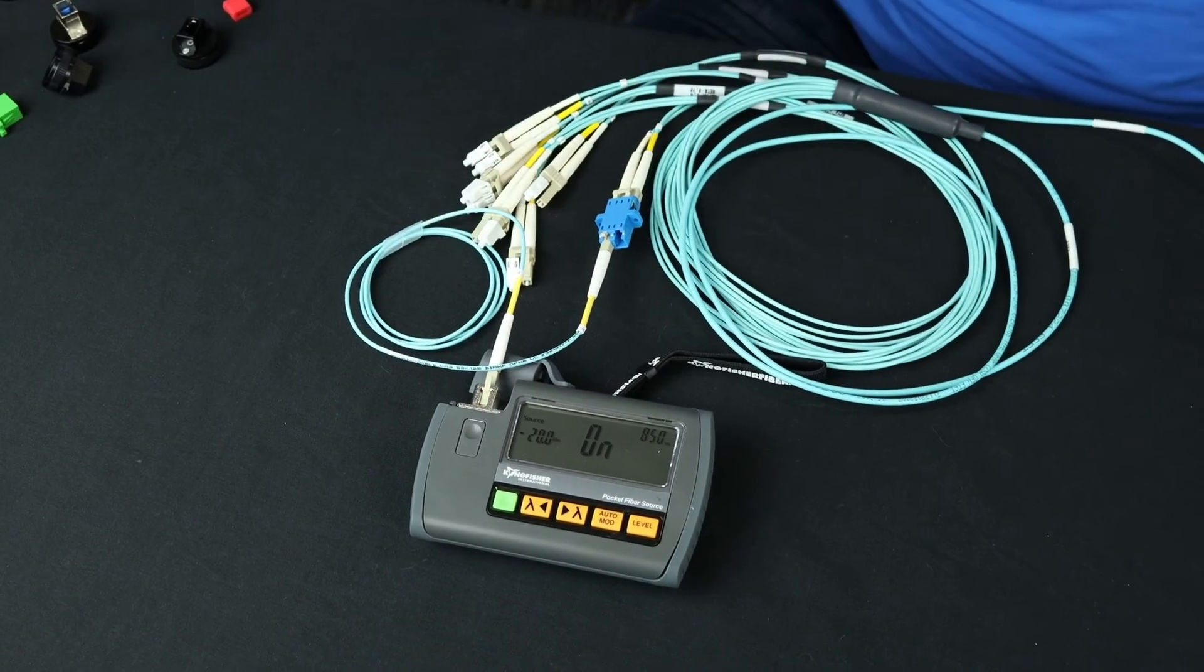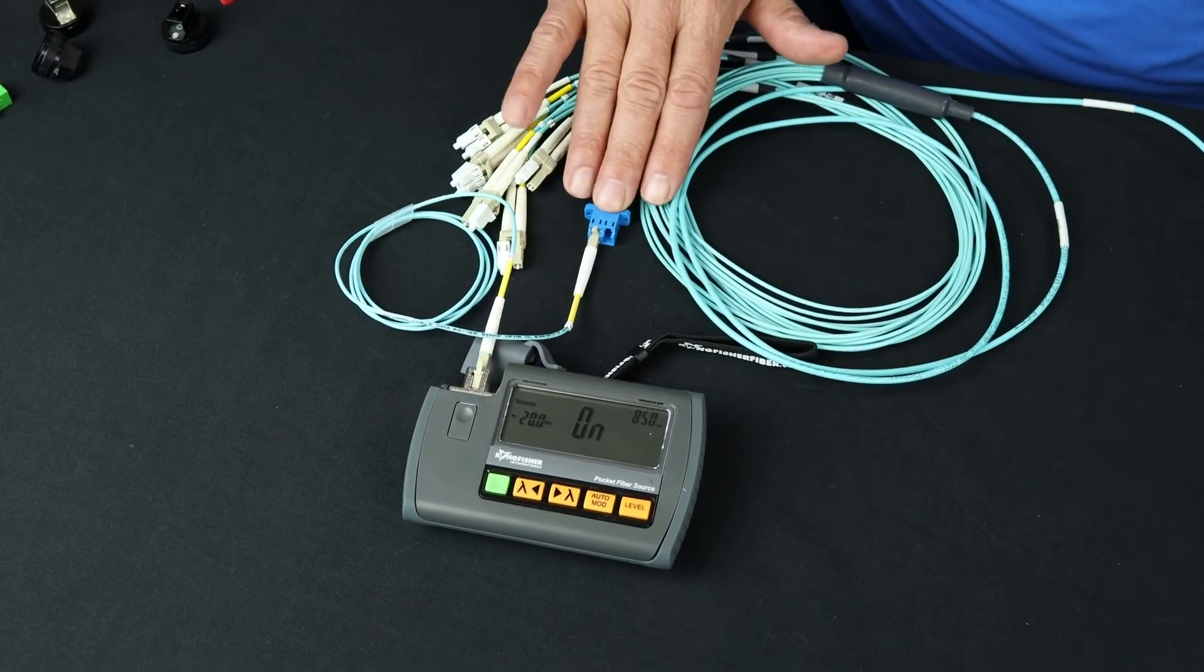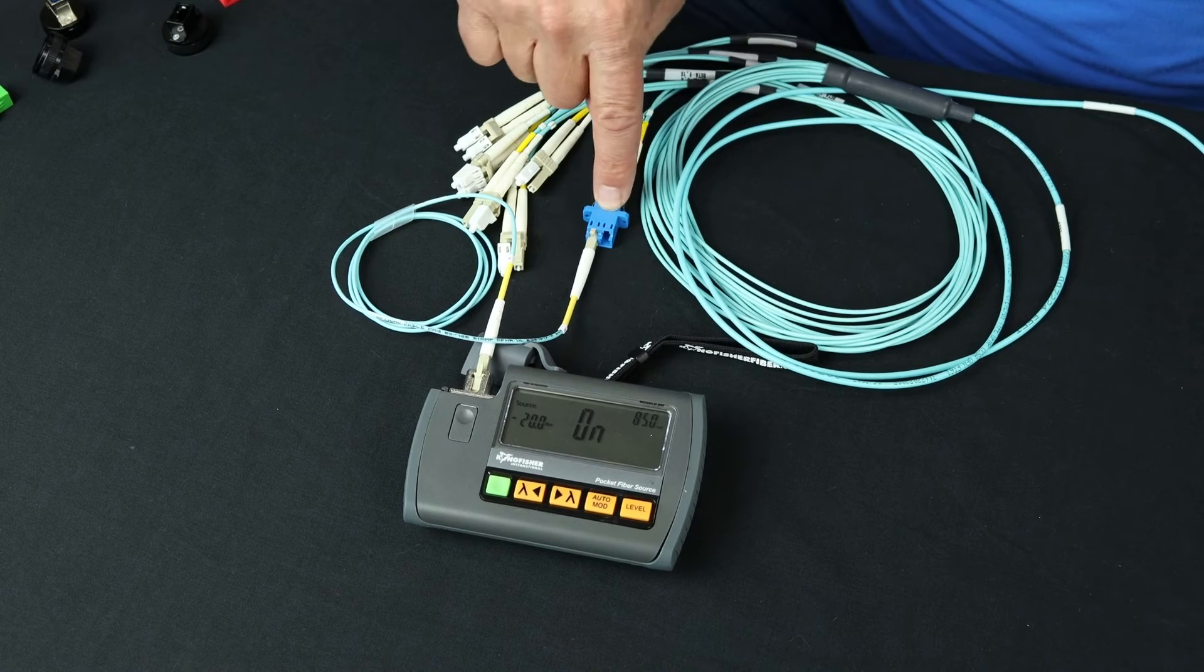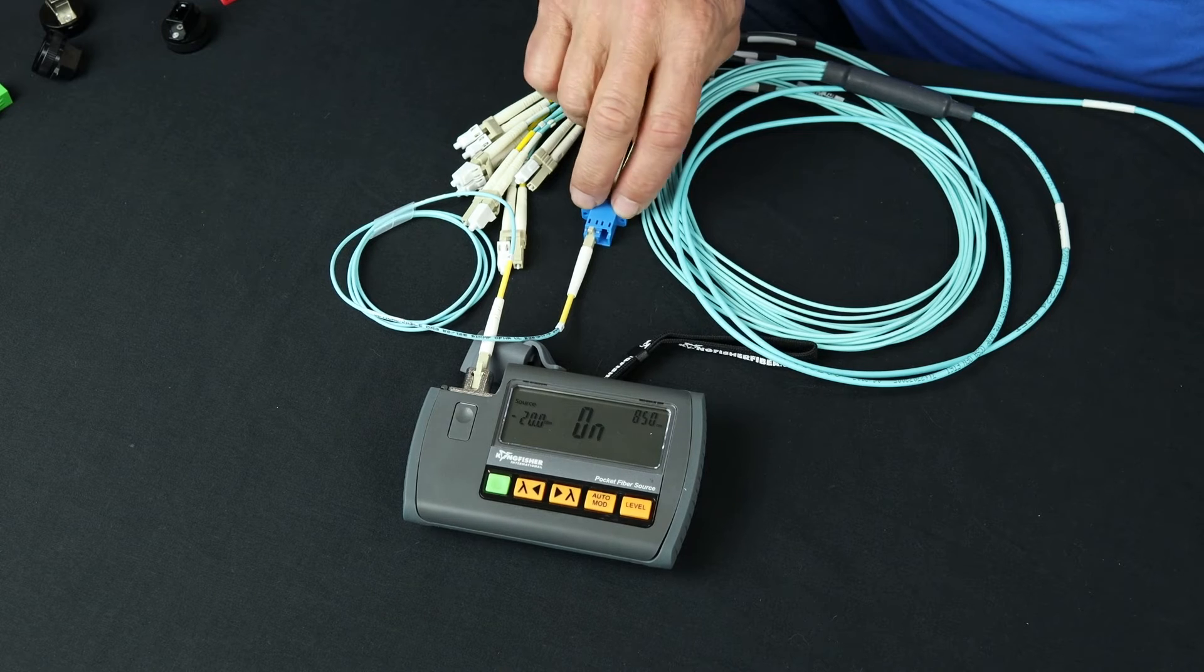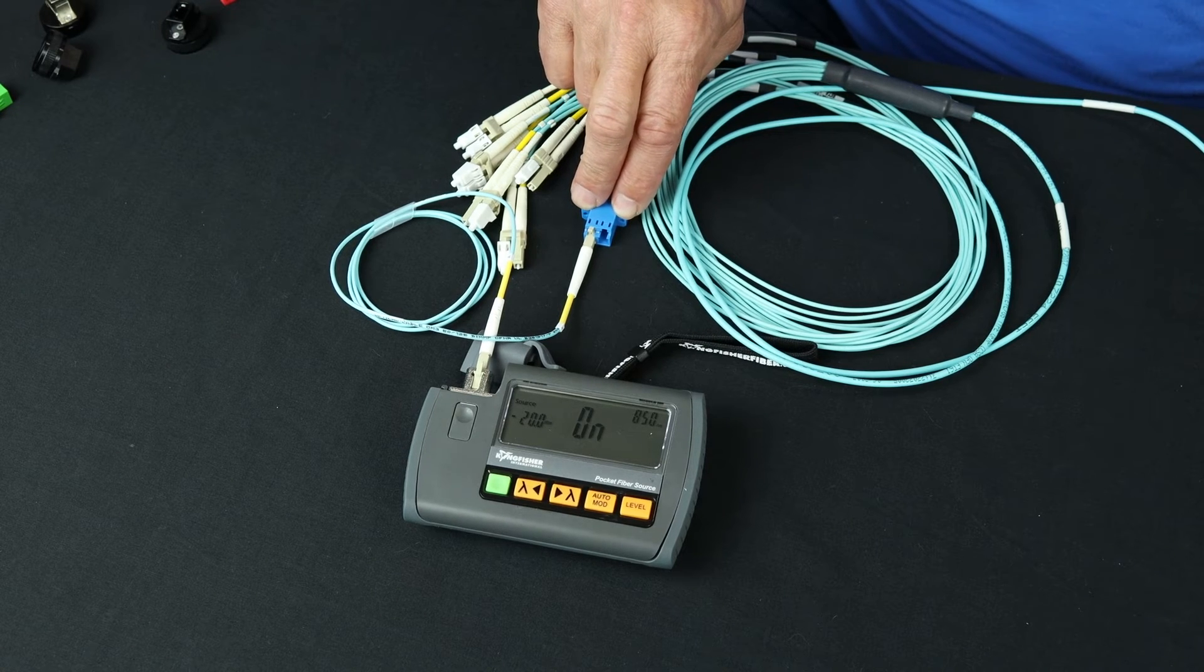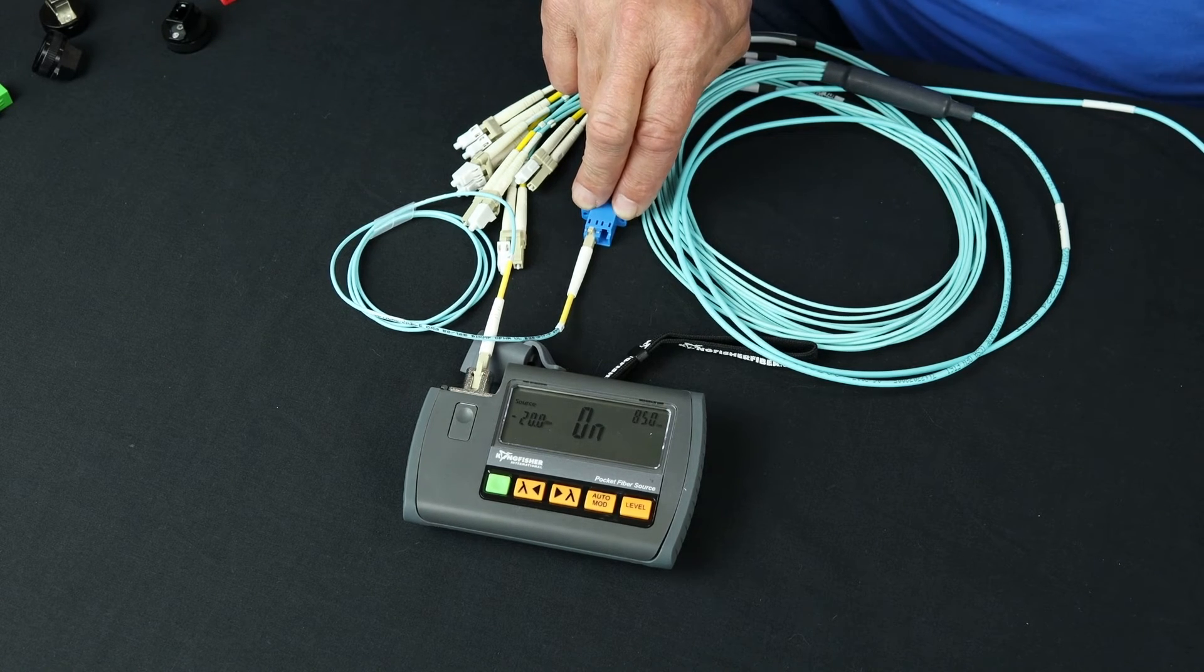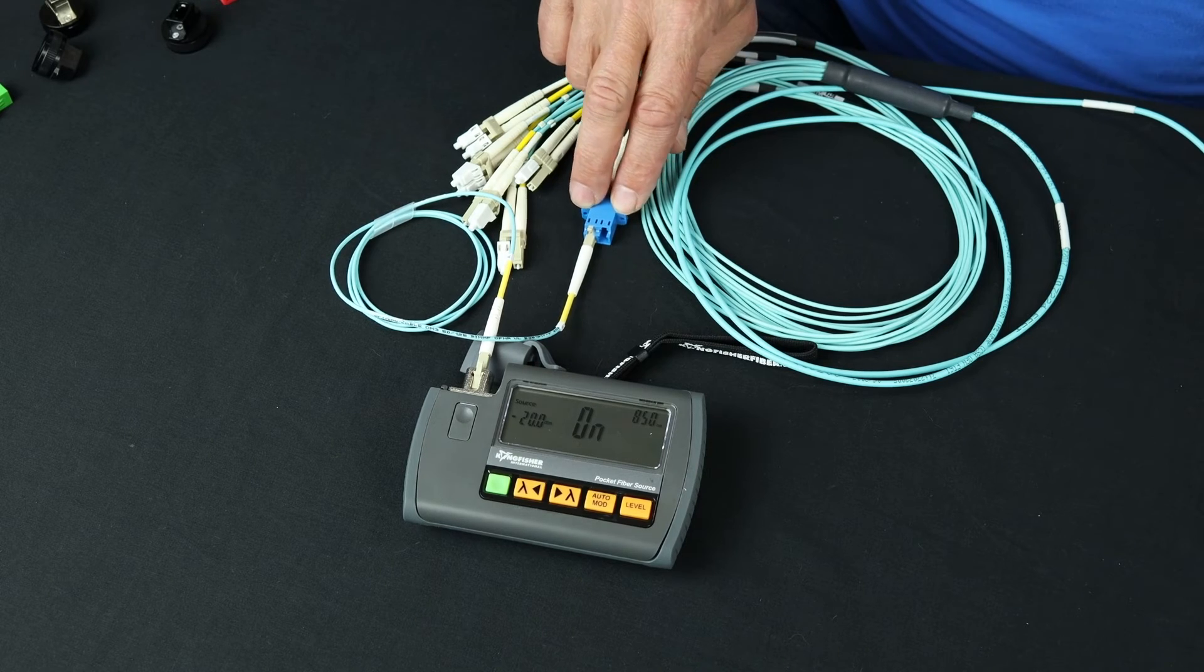There is obviously some additional uncertainty introduced by breaking and remating these LCs, but the 1.25 millimeter ceramic ferrule is probably going to give me a pretty stable 0.1, 0.15 dB loss.